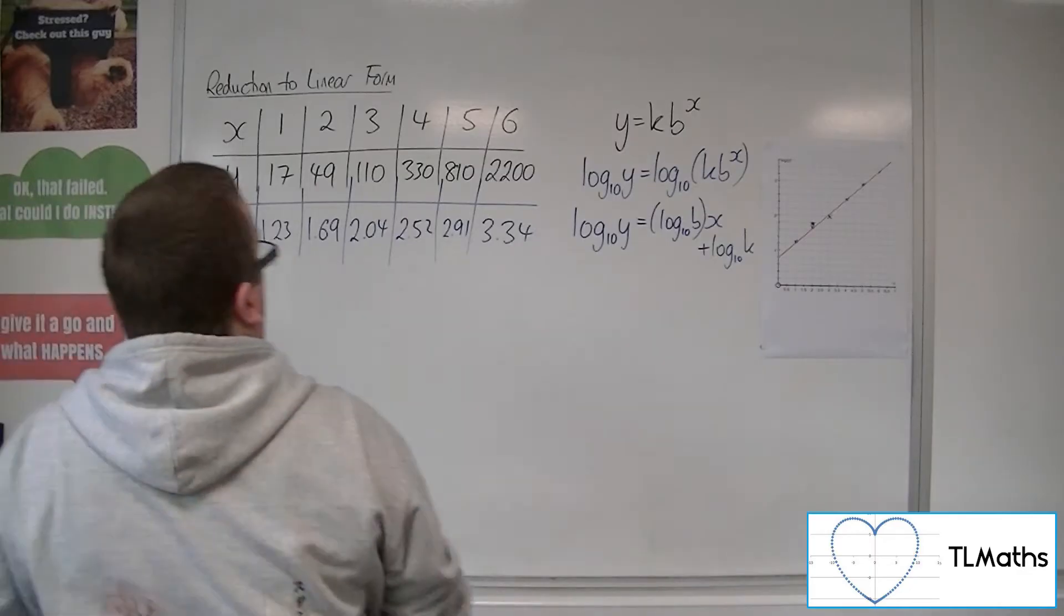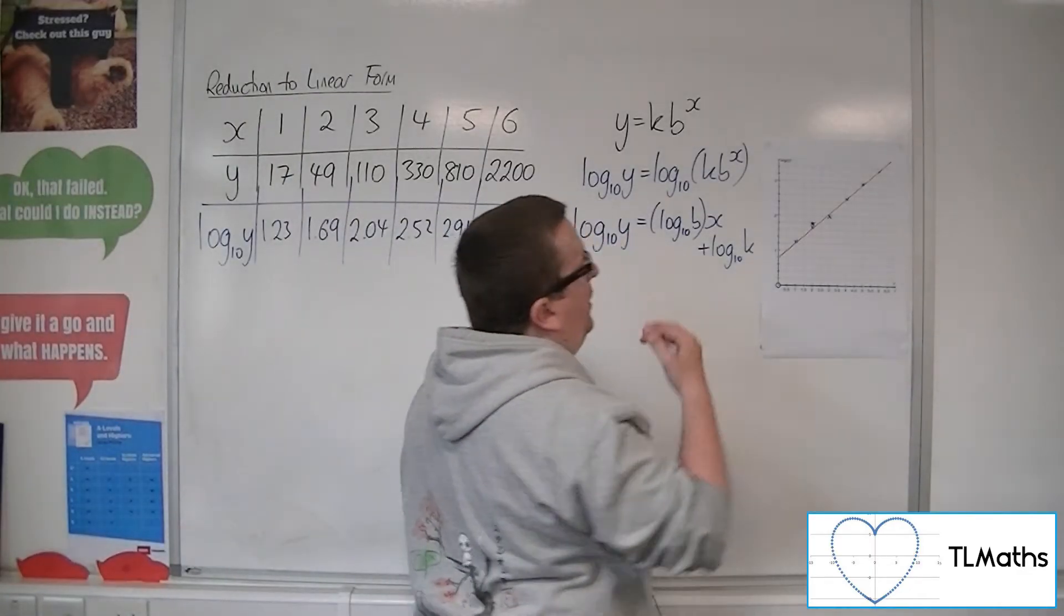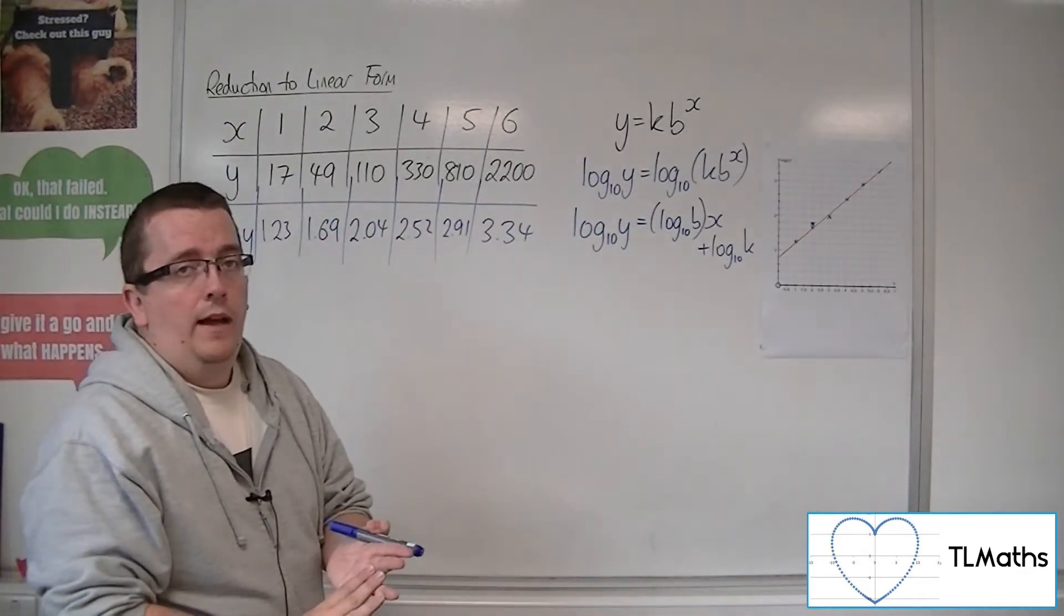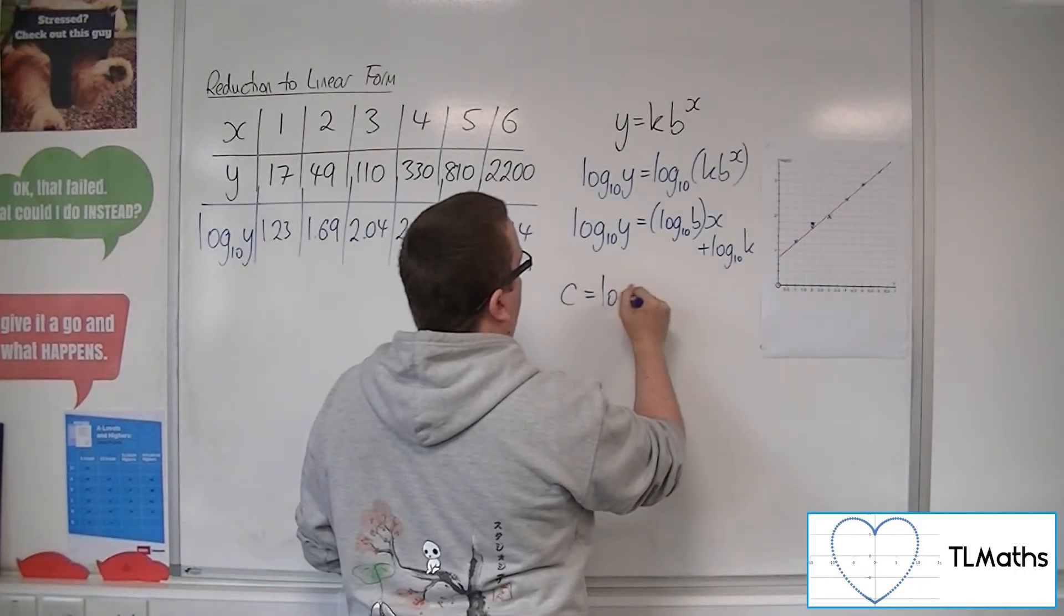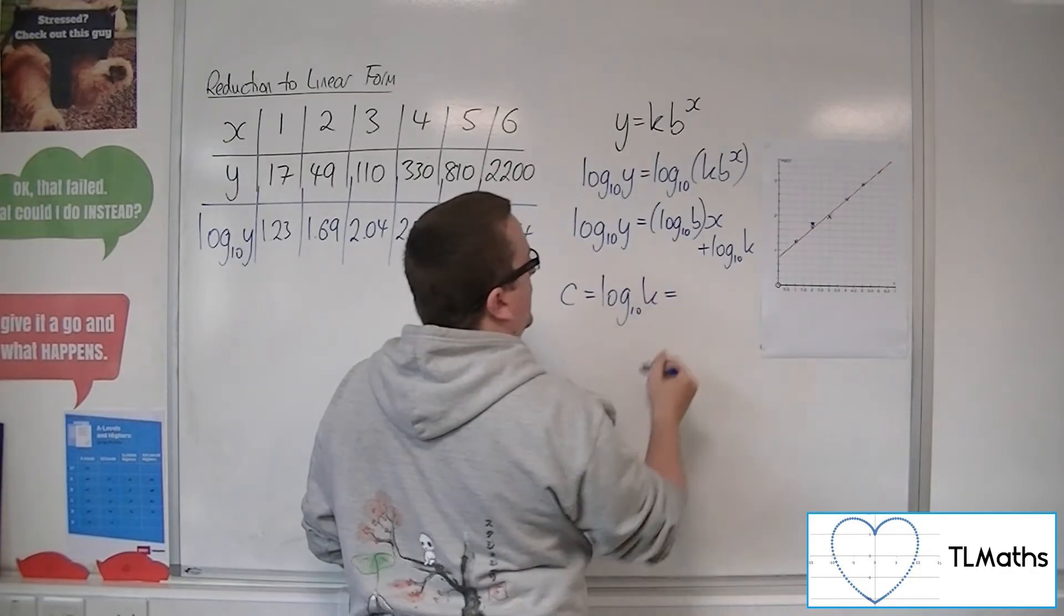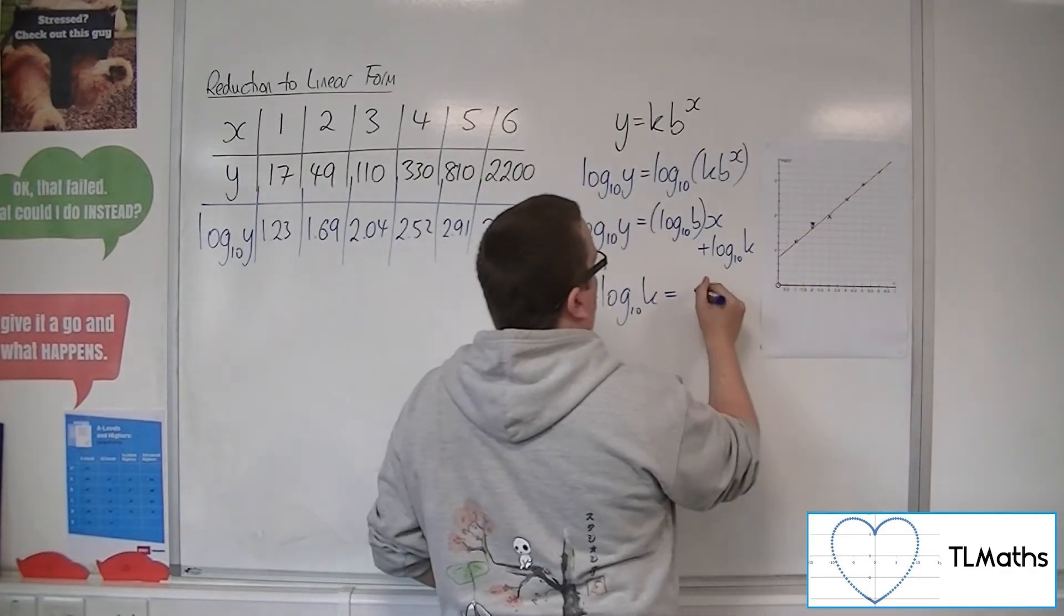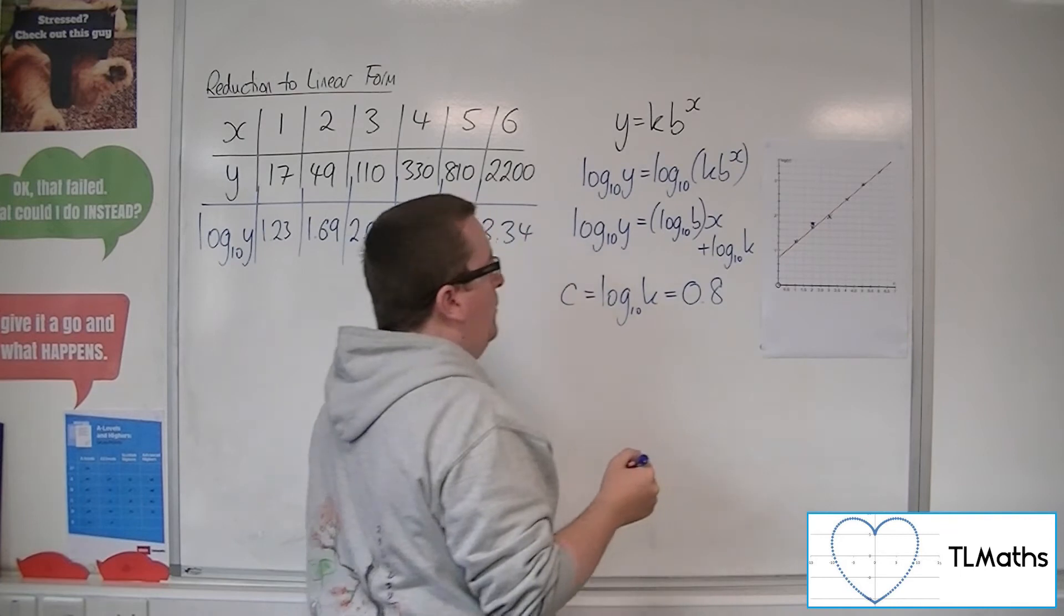So from that, what I want to do is work out the y-intercept and the gradient. Now the y-intercept, c is the log 10k. So I've got that as about 0.8.